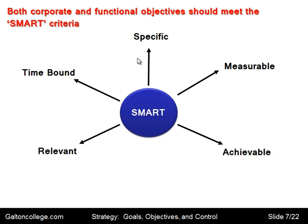M in SMART stands for measurable. It's important that the outcomes are measurable; otherwise, no one will know if they've been achieved or not. We can only say something's been achieved if we knew what was required and whether what was done matched that requirement. It has to be measurable.